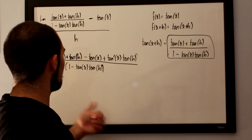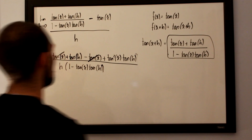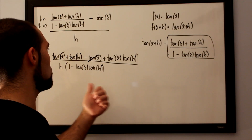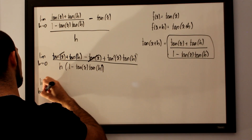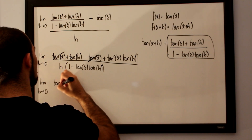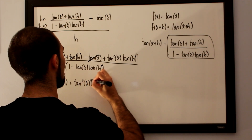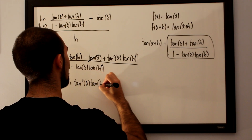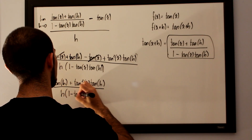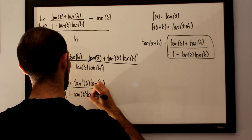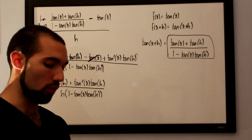Now we can cancel out common factors. There is a common tan(x) term we can eliminate, so all we are left with is tan(h) plus tan²(x)·tan(h), over h multiplied by 1 minus tan(x)·tan(h). We then factor a tan(h) out of the numerator.